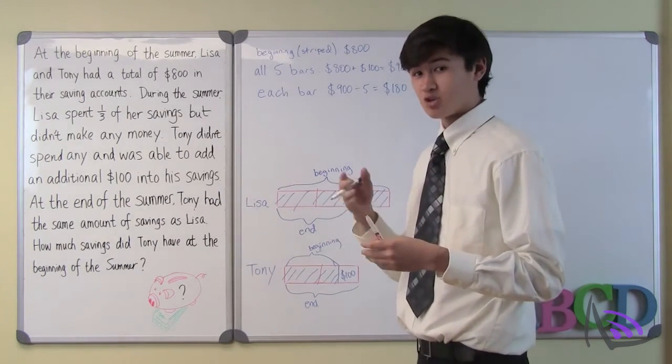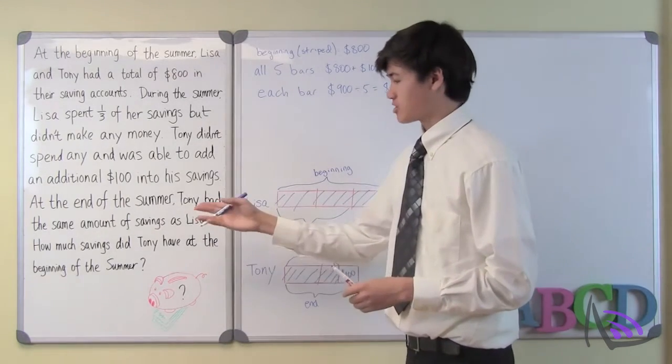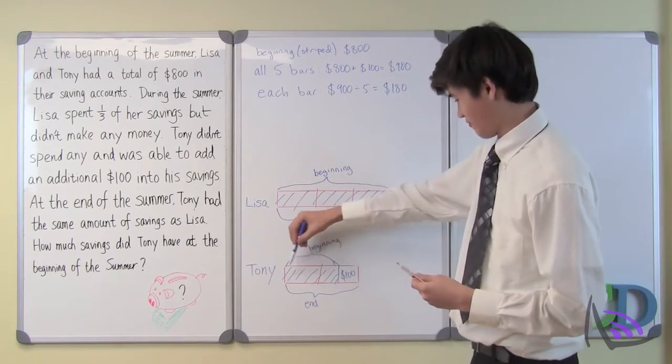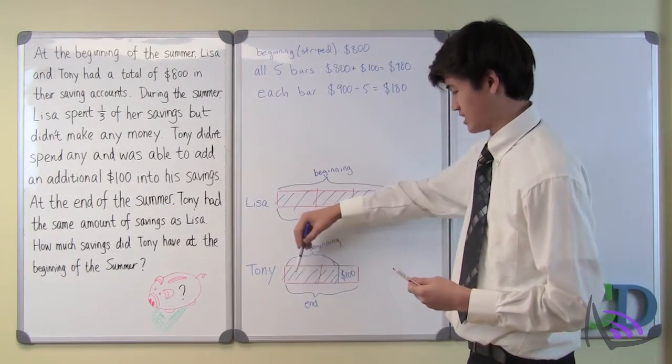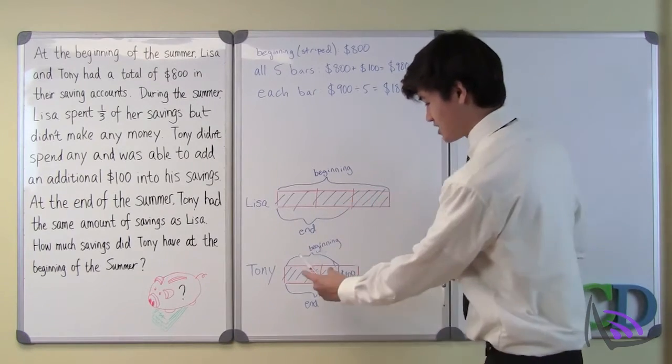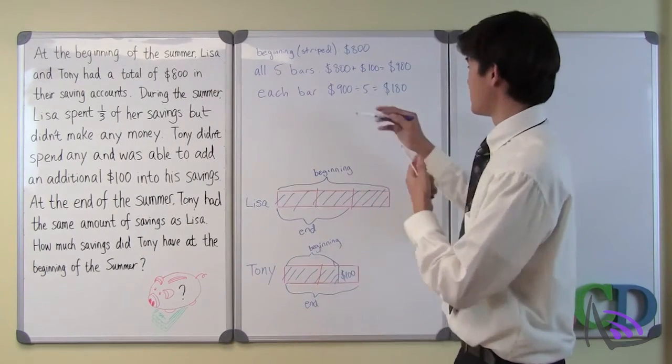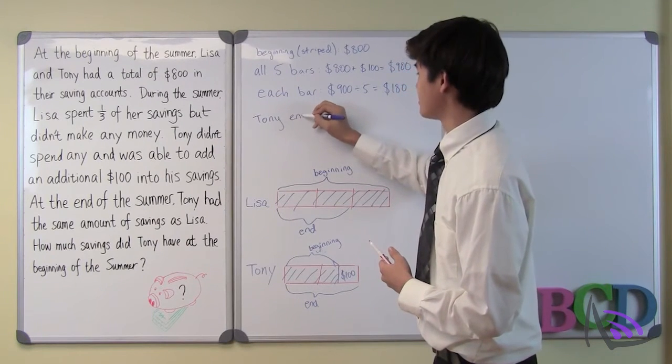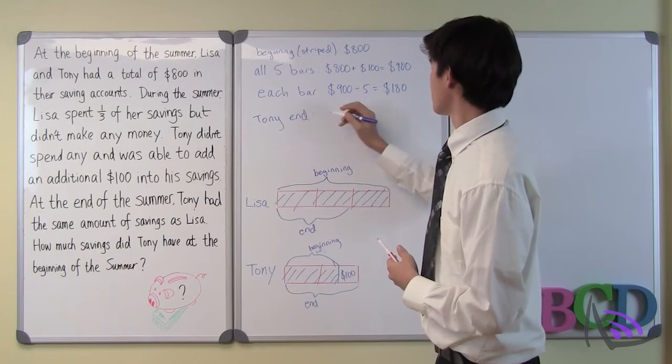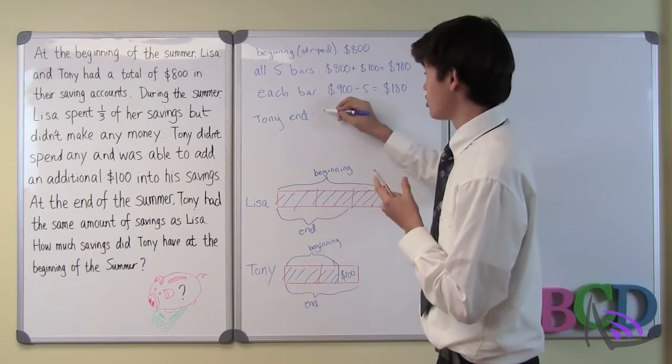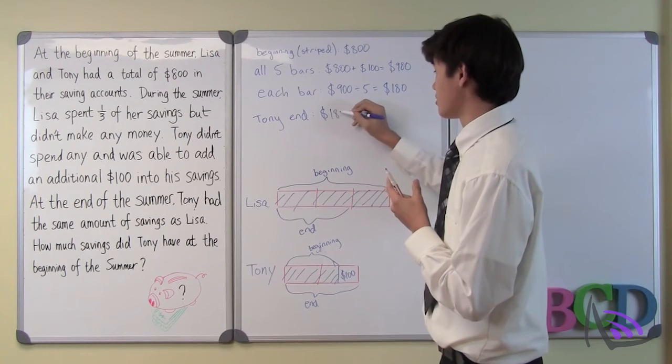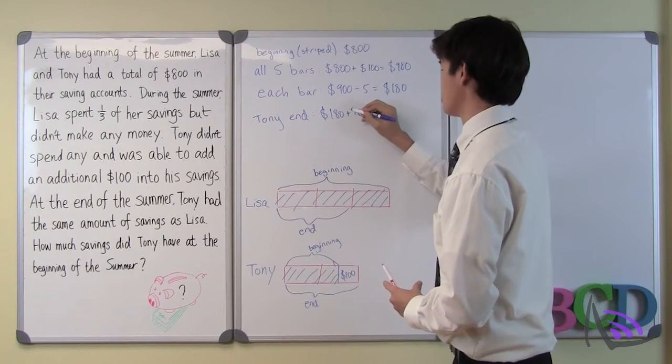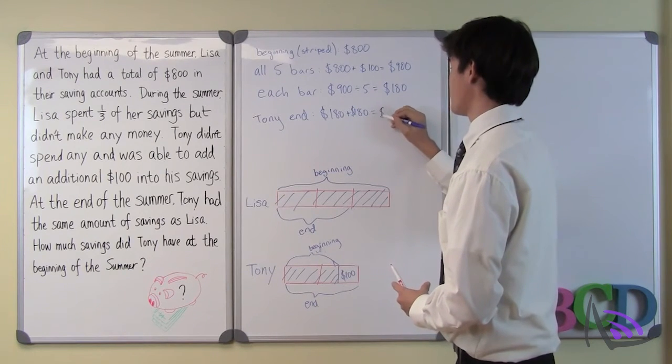Now that we've solved that, let's see what the question is asking: how much savings did Tony have at the beginning of the summer? So that was kind of difficult right there. We can't really get anything from there, so let's just go straight to the end of the summer. The end of the summer is just two bars, which means to find Tony at the end, we can just take each bar is $180. $180 plus another $180 is equal to $360.